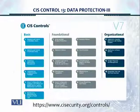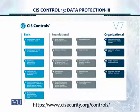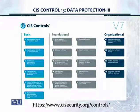Welcome. In this module we're going to take a look at CIS control number 13, Data Protection. This is the third part of the module series for data protection. This is the layout for the version 7 controls. We have 20 CIS top 20 critical controls, and we're taking a look at CIS control number 13, which is part of the foundational controls.